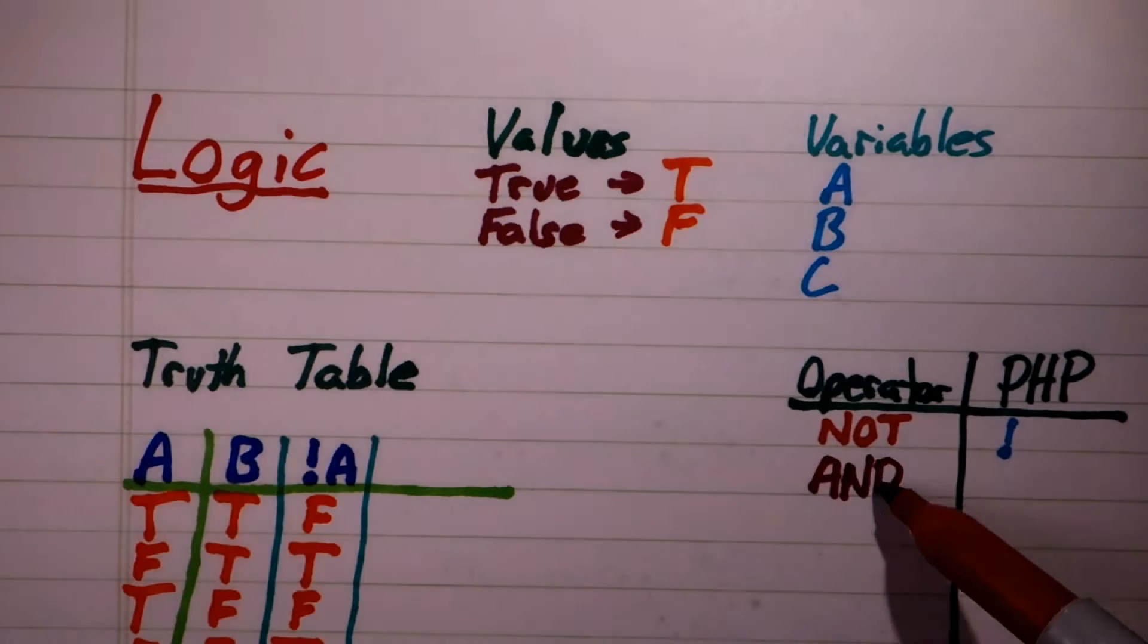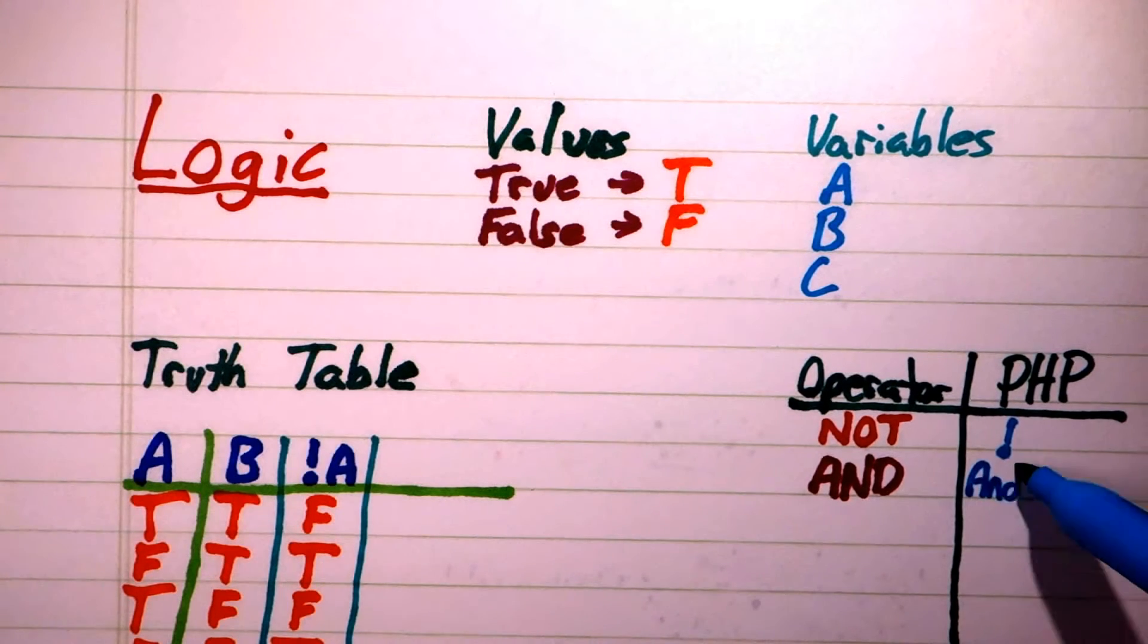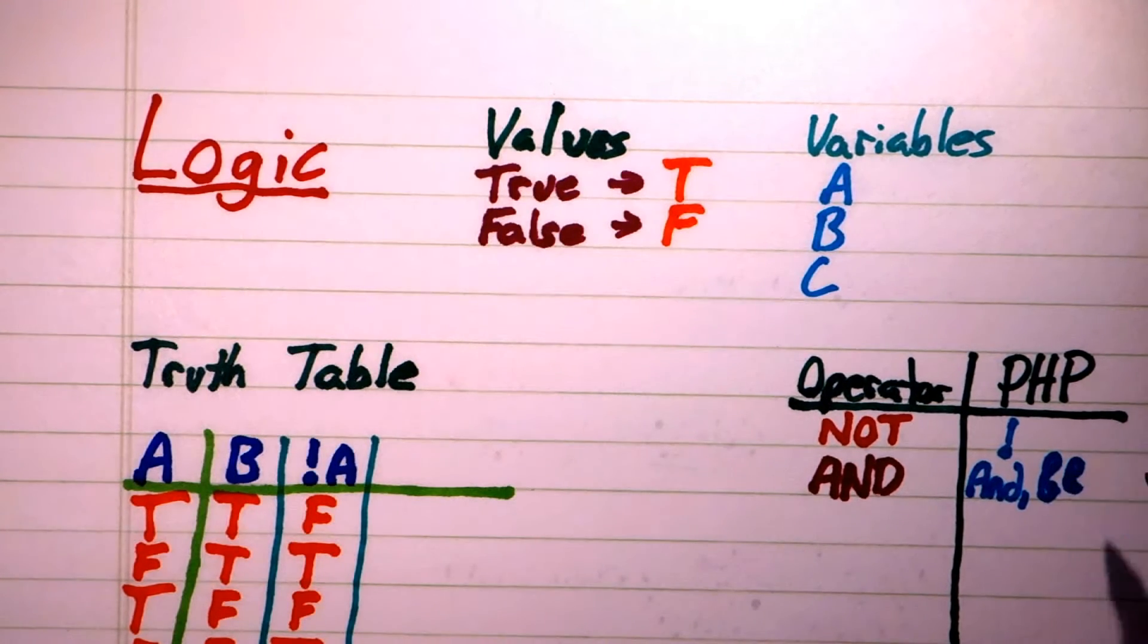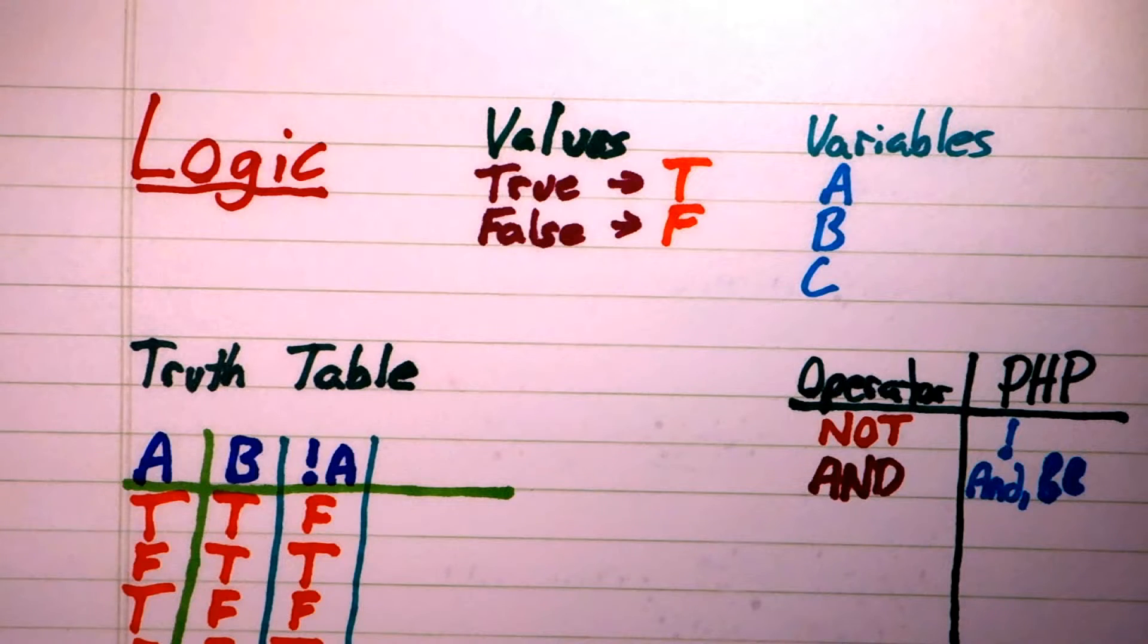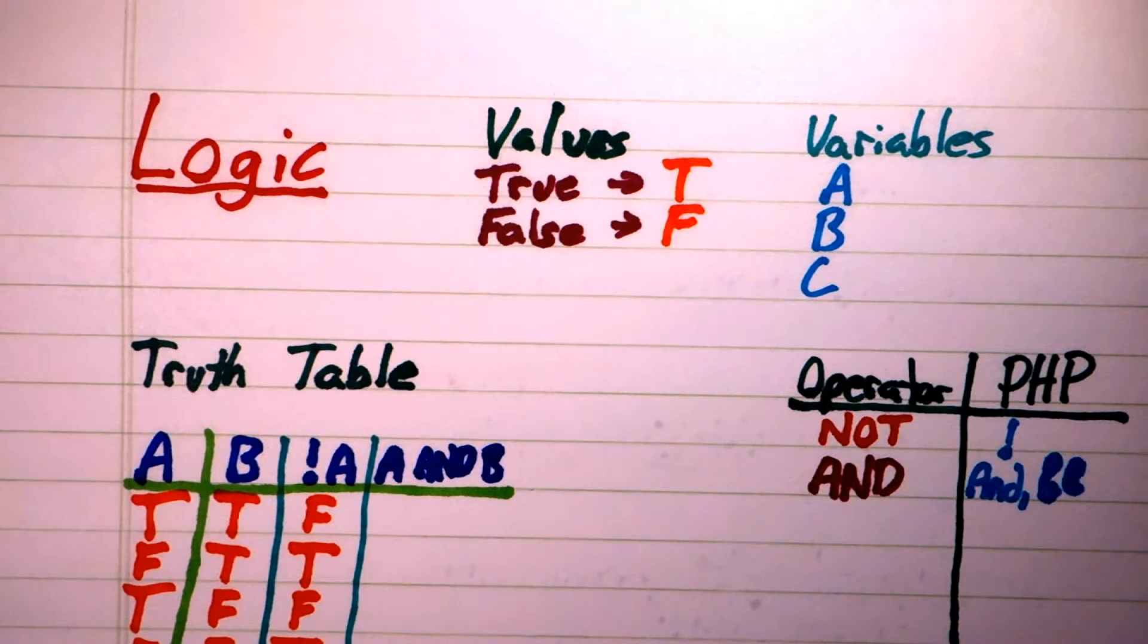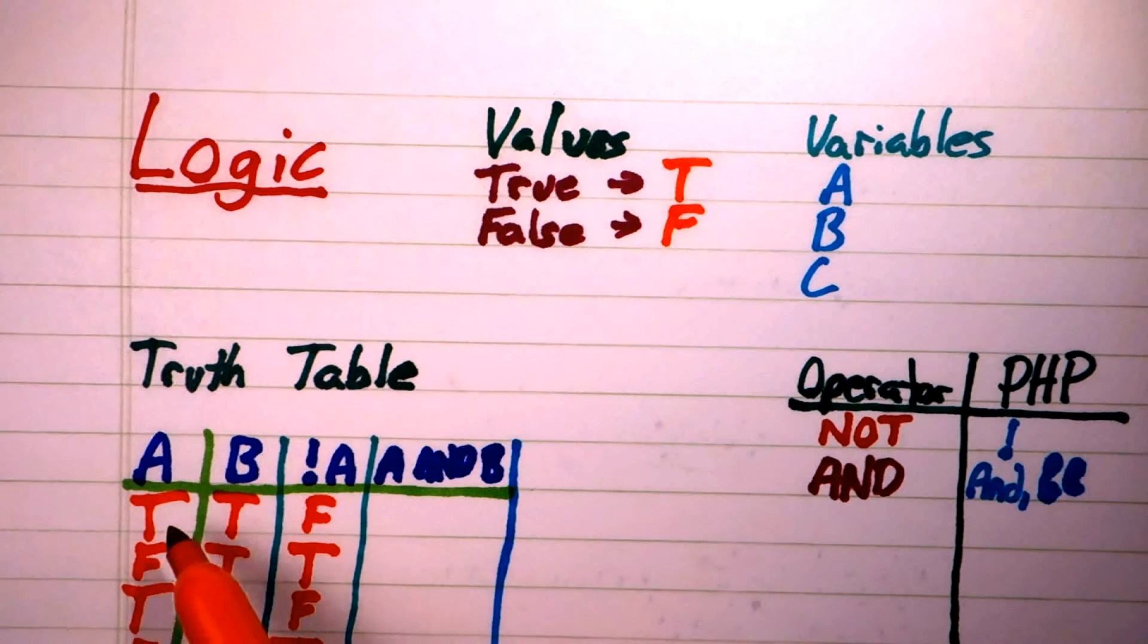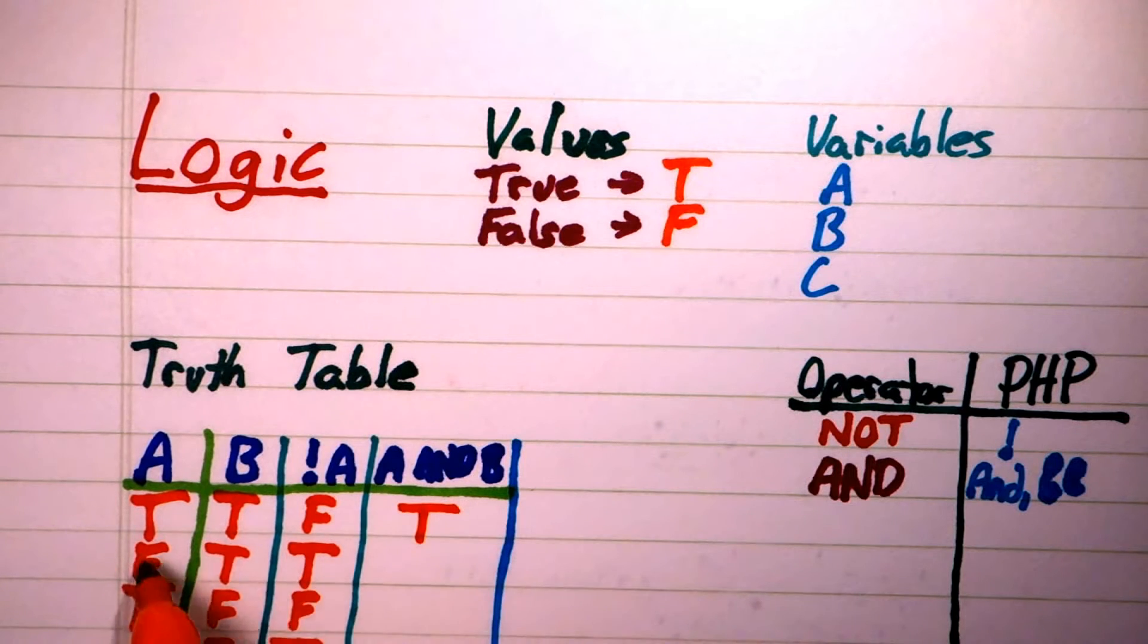The next important logical operator is the AND operator. It is a binary operator, which means that it operates on exactly two values. When both values are true, the AND of them is also true. In all other cases, the result of AND is false.